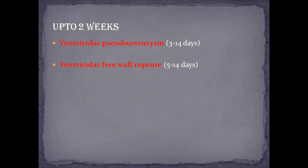For up to two weeks after an acute myocardial infarction, the patient may present with ventricular pseudoaneurysm and ventricular free wall rupture. In free wall rupture, the patient usually presents with very severe symptoms: cardiac tamponade and potentially sudden death. Ventricular pseudoaneurysm is formed by the pericardium with no involvement of the endocardium or myocardium, giving it a higher risk of rupture than a true aneurysm.